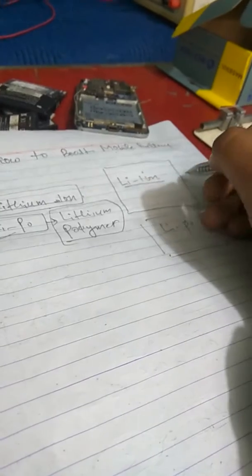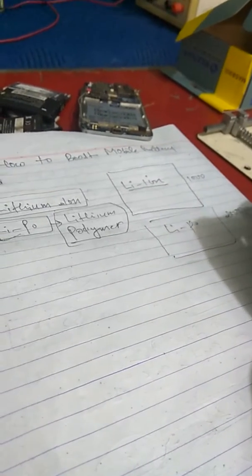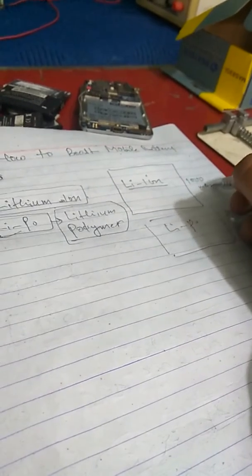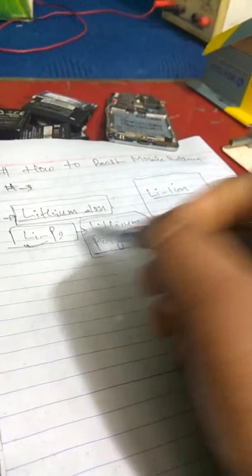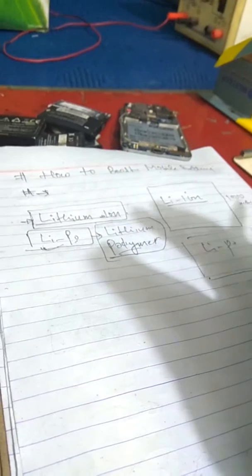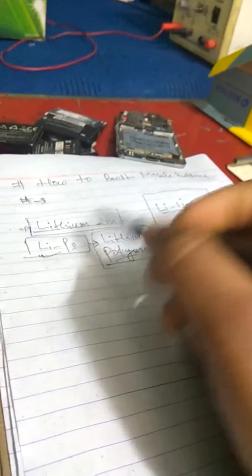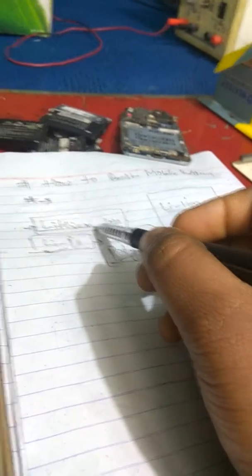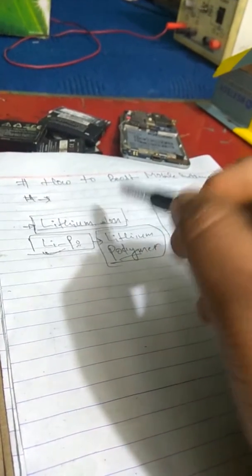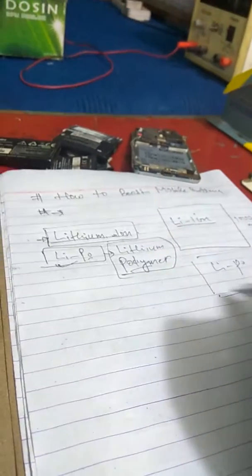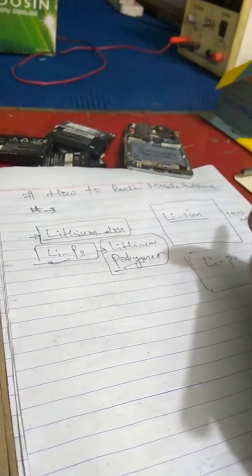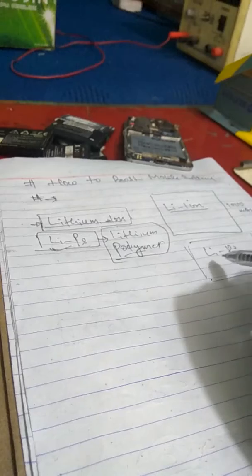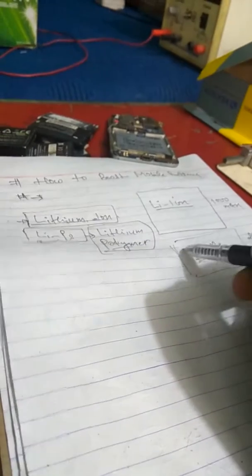This is a Li-polymer battery. Its capacity is around 1000 to 2000 mAh. It is light. A polymer battery has a lot of energy storage and can be stored in more form factors, but it has slightly less charge storage density. Battery size matters — consider whether you need a Li-ion or Li-polymer battery.